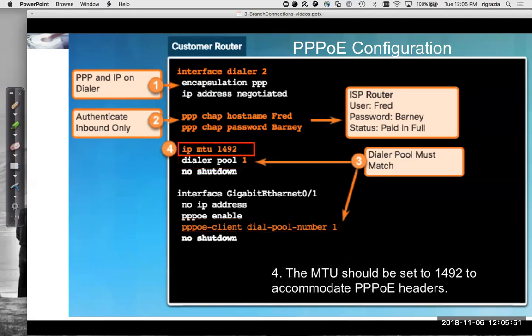We also have IP MTU 1492. We need to modify the IP MTU from 1500 to 1492 — we'll talk about that more in an upcoming video. But this is how you configure PPPoE using a Cisco router.